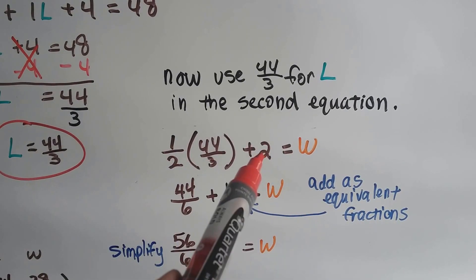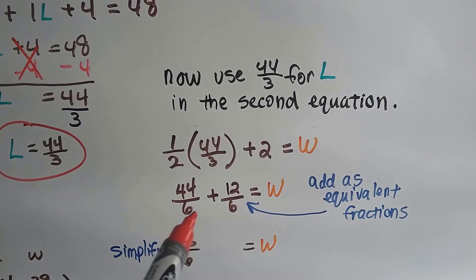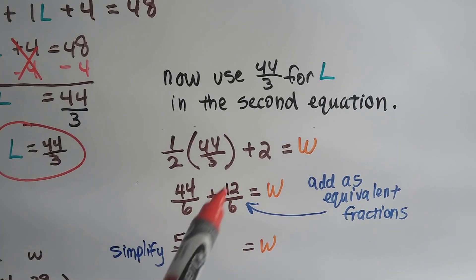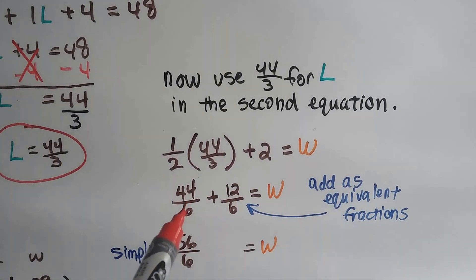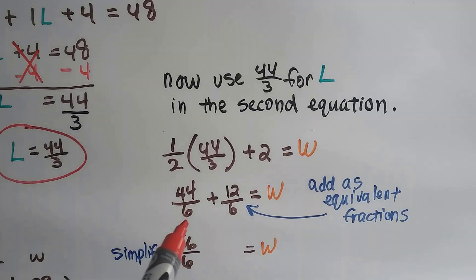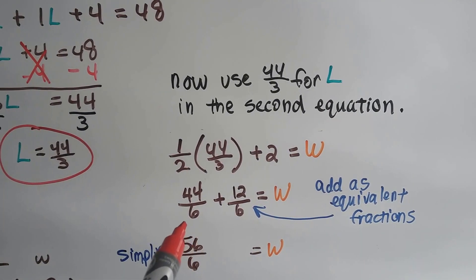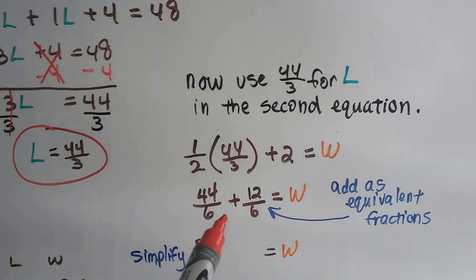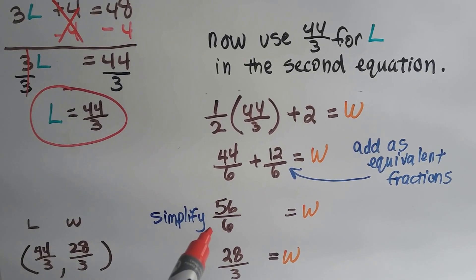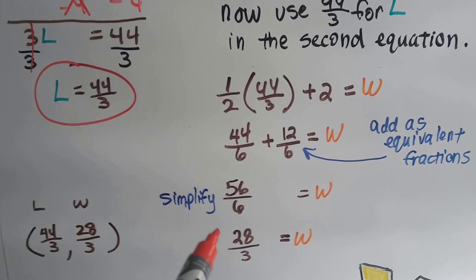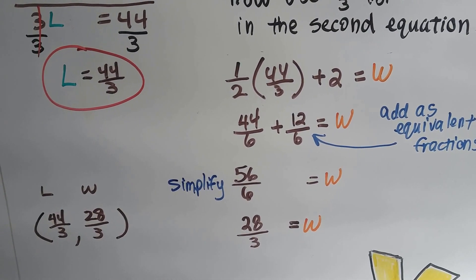And we can turn this into an equivalent fraction with the same denominator so we can add it together and we're keeping it in fraction form. And this would be 12 over 6 to be a 2. So we have 44/6 plus 12/6. That gives us 56/6. And when we simplify it, it comes out to 28 over 3.